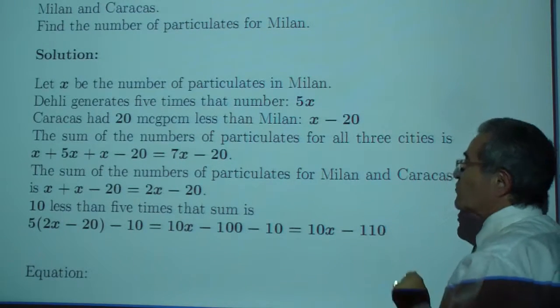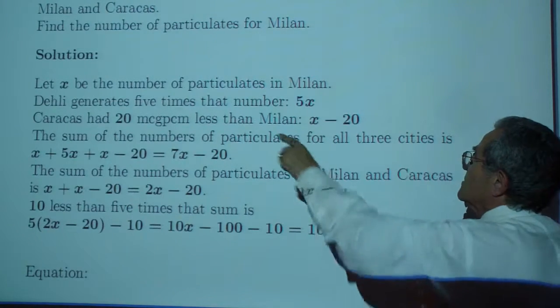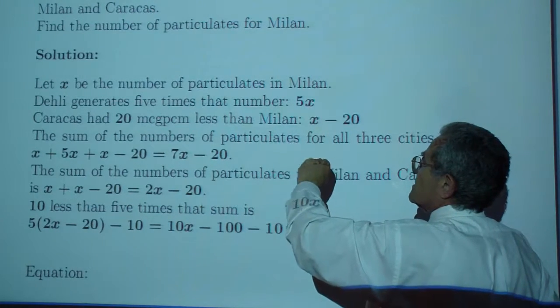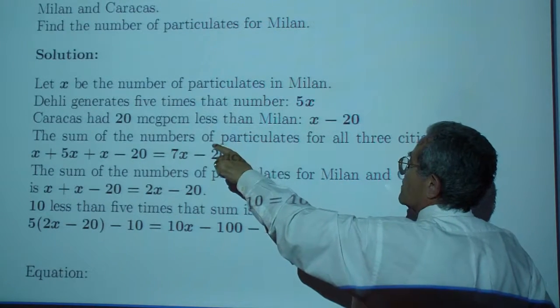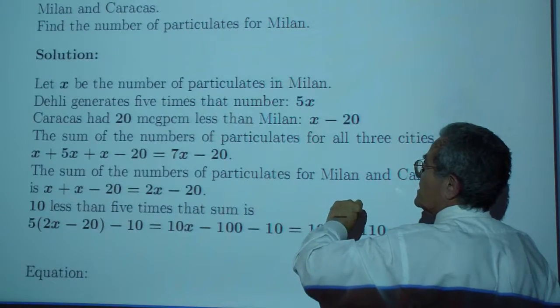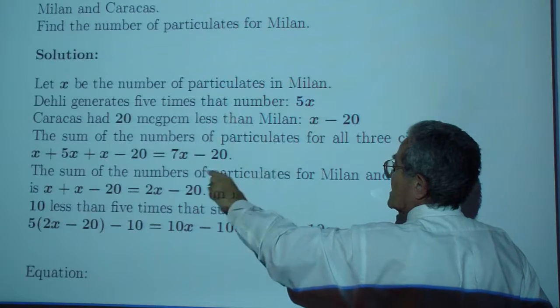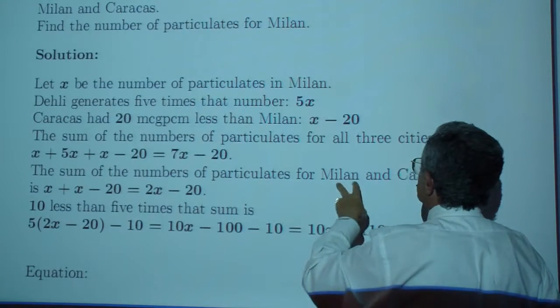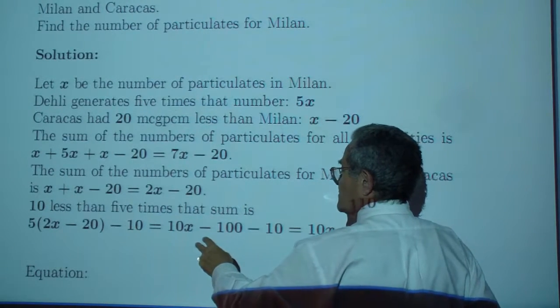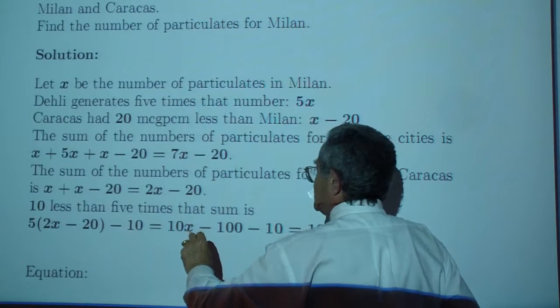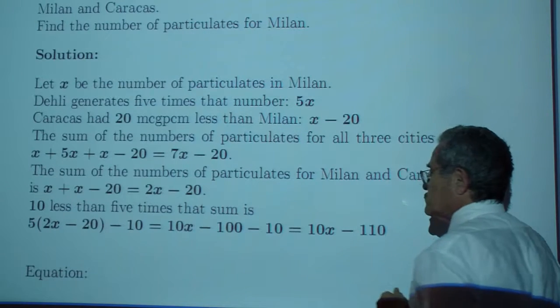Let's get a preamble before the equation. A symbol for everything that goes into the equation. Let X be the number of particulates for Milan. Delhi generates 5 times that number, so 5 times X. Caracas, 20 less than that, so X minus 20. The sum of the first three is X plus 5X plus X, which is 7X minus 20. The sum for Milan and Caracas, 2X minus 20. 10 less than 5 times that number is 10X minus 110.